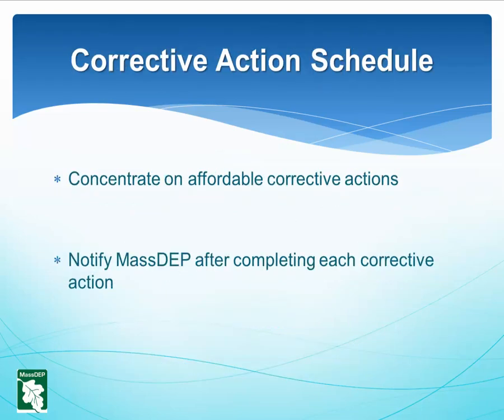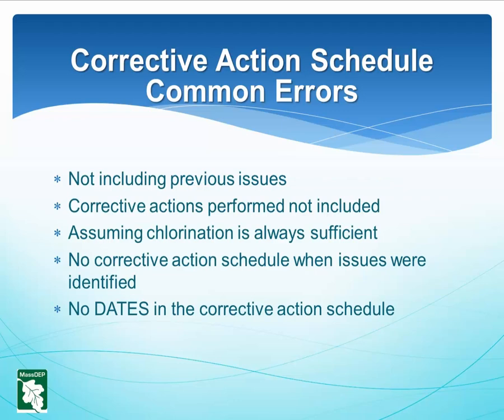When taking corrective actions, do not include wish list items or work you cannot fund, because these will be enforceable. It is the PWS's responsibility to notify MassDEP when each corrective action on the schedule is completed. Common errors in corrective action schedules include: not including issues identified in previous inspections even when relevant; failing to include corrective actions performed; assuming chlorination is always sufficient; failing to include a corrective action schedule even when issues are identified; and not including dates in the corrective action schedule.